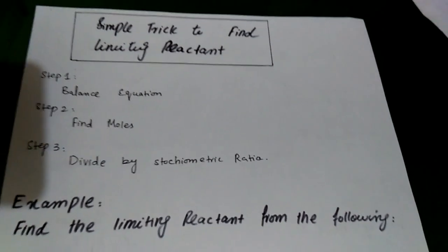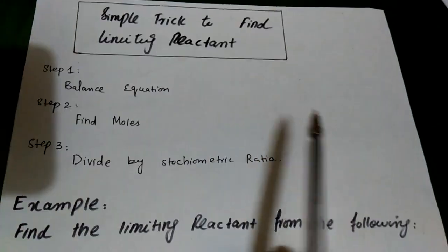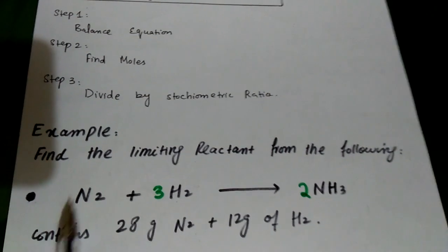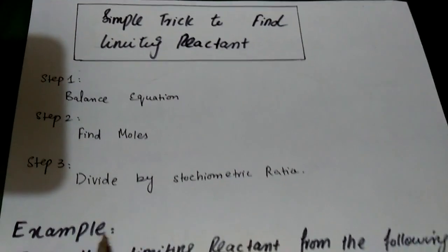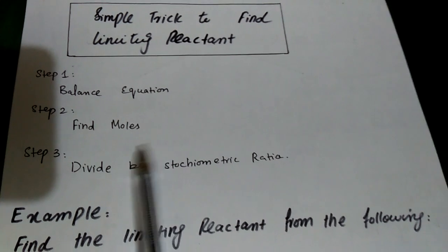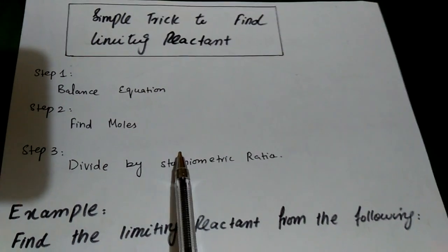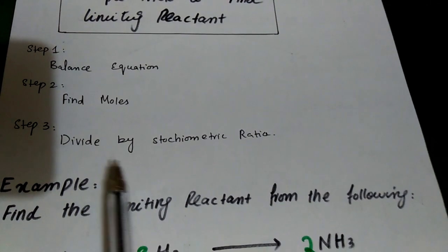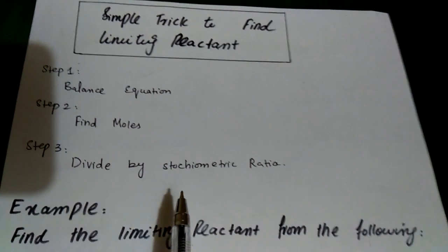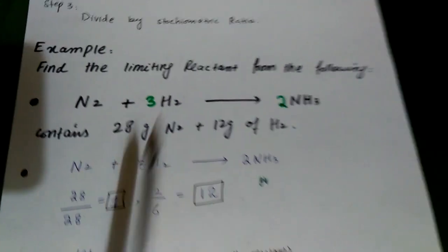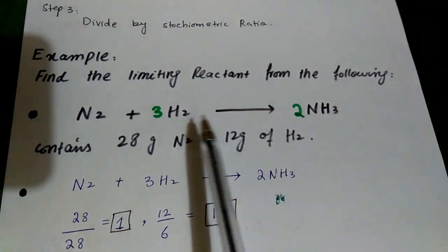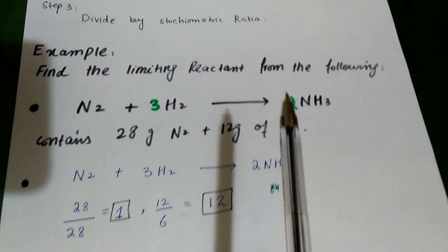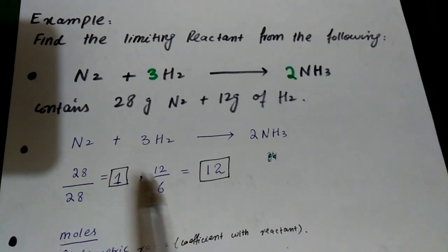Next we will talk about a very simple trick to find the limiting reactant. We have divided it into 3 simple steps. When they give any reaction and ask which is the limiting reactant: first, we have to balance the equation. Then we have to find the molecular mass of the given substances and the number of moles.